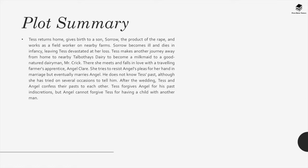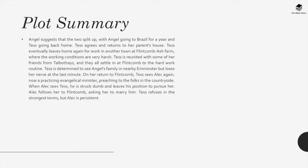Tess makes another journey to nearby Talbothays dairy to become a milkmaid for dairyman Mr. Crick. There she meets and falls in love with Angel Clare, a travelling farmer's apprentice. She tries to resist Angel's pleas for her hand in marriage but eventually agrees. He does not know Tess's past, although she has tried on several occasions to tell him. After the wedding, Tess and Angel confess their pasts to each other. Tess forgives Angel his indiscretions, but Angel cannot forgive Tess for having had a child with another man. Angel suggests they split up, with him going to Brazil for a year and Tess returning home.